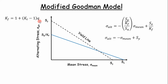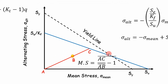To make this a modified Goodman model, we draw a yield line. You're looking at two lines. The yield line goes from the yield strength of the material on the y-axis to the yield strength of the material on the x-axis. If your operating point falls below these lines, you're good. You can calculate a margin of safety by taking the distance AC — the length from origin A to C — divided by the length to your operating point AB, and then subtracting by 1.